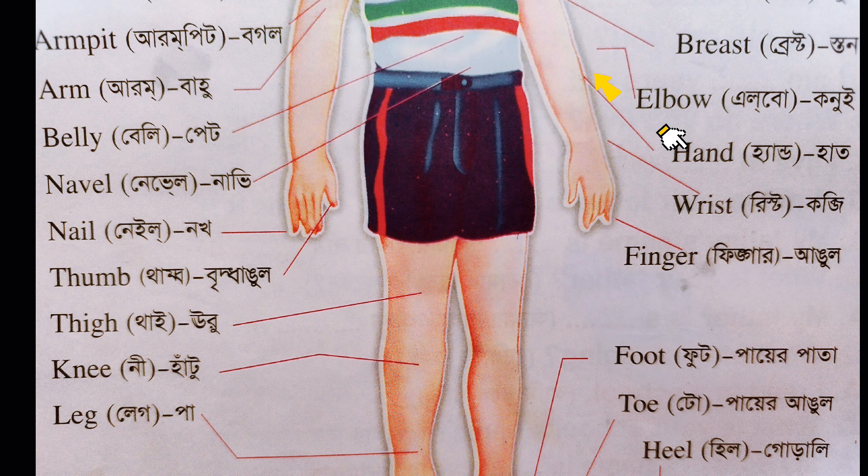Toe — the Bangla meaning of Toe is 'Pair Angul'. Heel — the Bangla meaning of Heel is 'Gorali'.